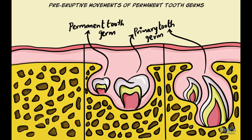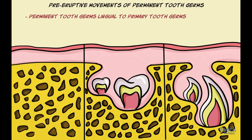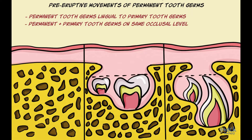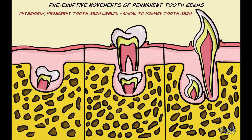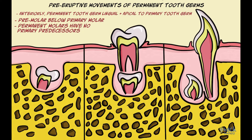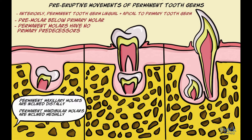Permanent tooth germs also move in relation to the primary tooth germs. Initially, permanent tooth germs lie lingual to their primary predecessors and are on the same occlusal plane. But at the end of this phase, pre-eruptive movements finally position the permanent anterior teeth lingual and apical to the primary anterior teeth, and the permanent premolars are positioned under the divergent roots of primary molars. Permanent molars however do not have a primary predecessor. The upper permanent molars are positioned with their occlusal surfaces tilted distally, and lower molars are tilted mesially.